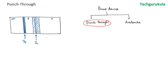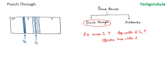We know that if the reverse bias across the collector junction is increased, the depletion width in the collector junction would increase. If the depletion width at the collector junction increases, the effective base width would reduce. We have seen this as effective base width modulation. Now let me show the depletion width when collector junction reverse bias is increased, calling this the first case and the second case.